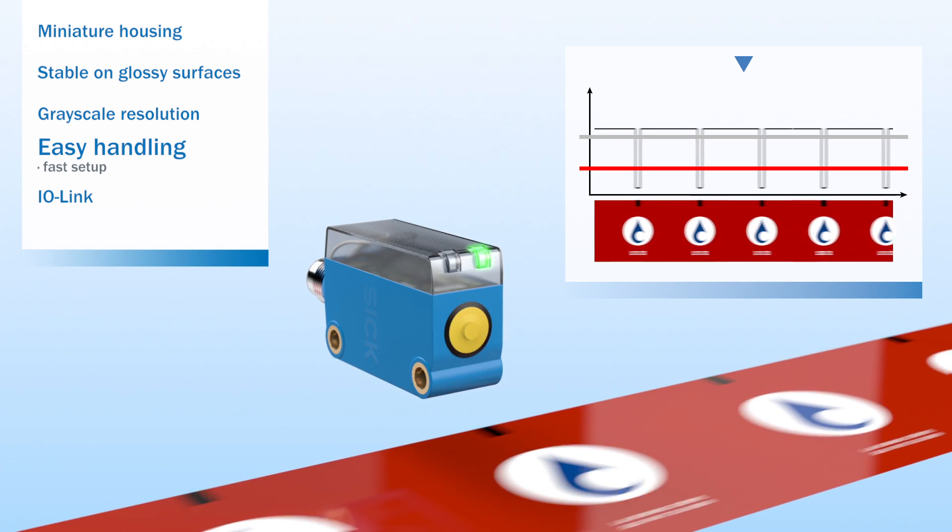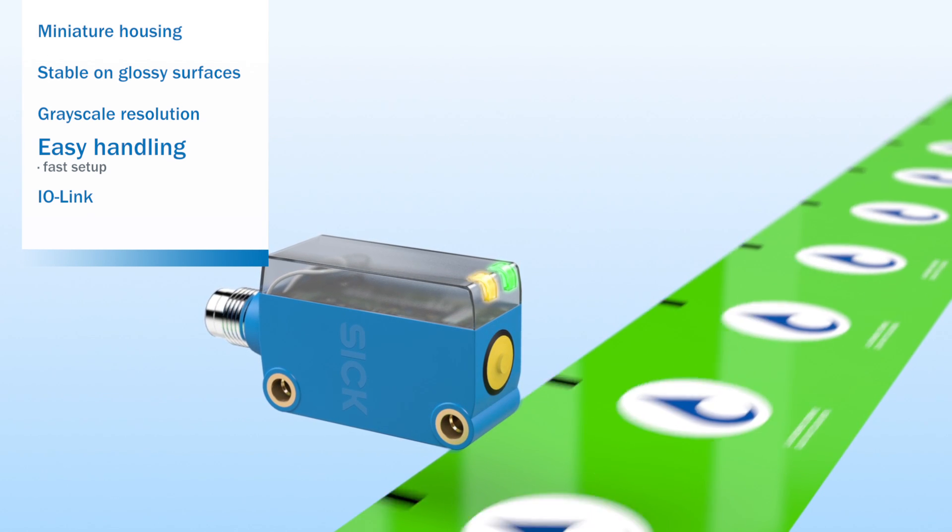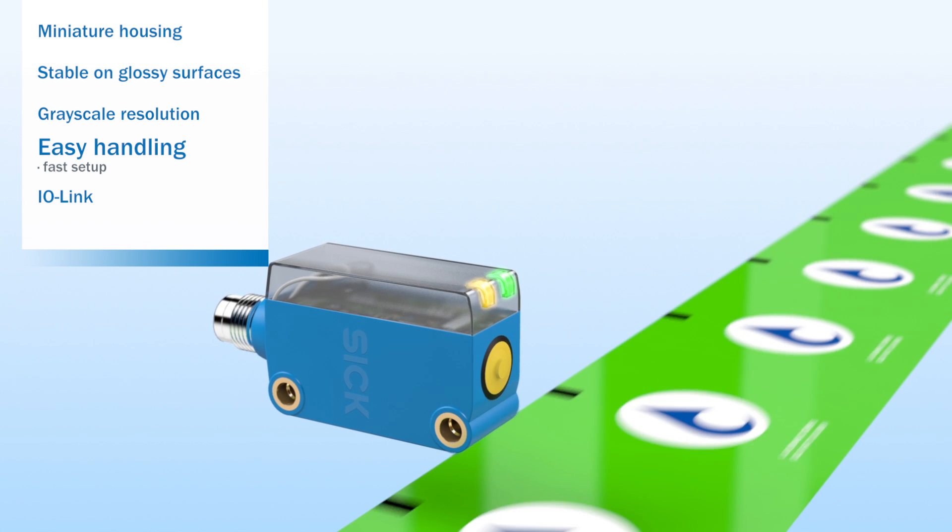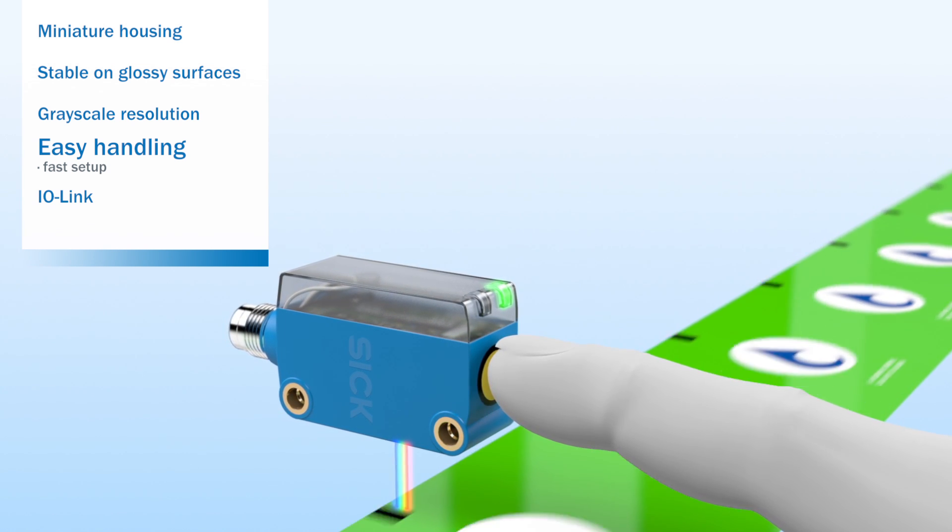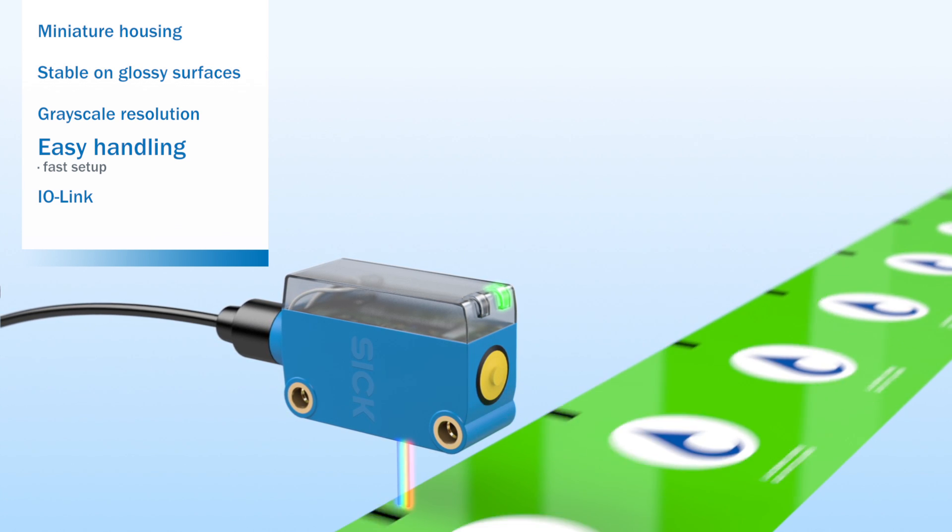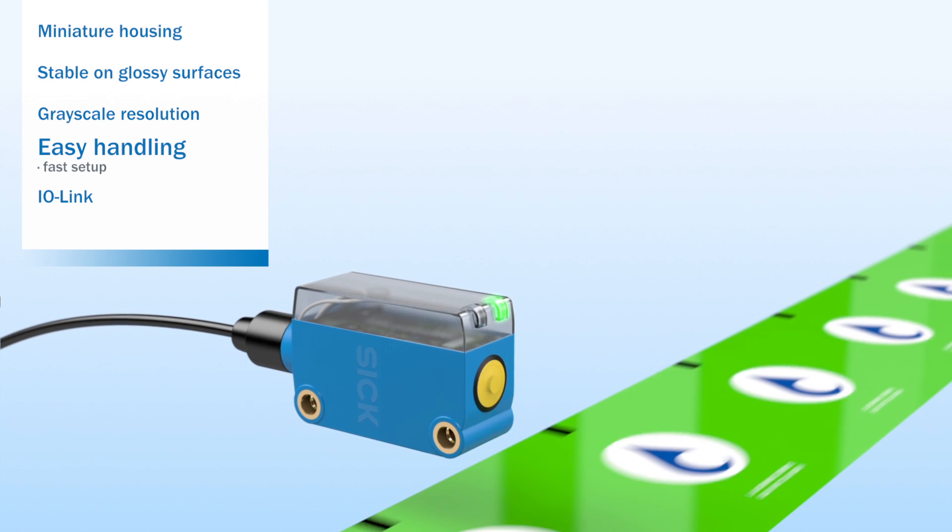Supplementary to these static methods, dynamic teach-in of materials is also supported. If the push button is pressed and held down while the material is running or a signal is sent via the control cable, the KTM will capture the differences in brightness between background and mark.